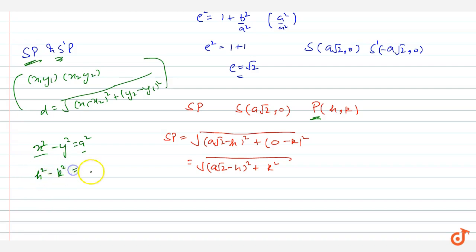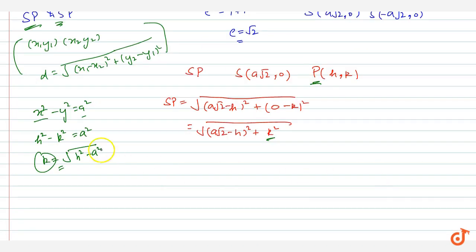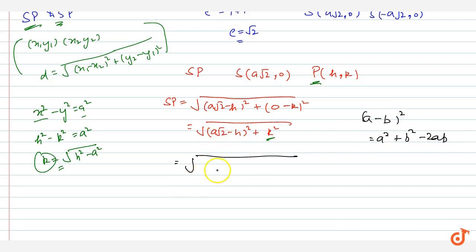Since point P lies on the hyperbola, substituting gives h² − k² = a², so k² = h² − a². Putting this k² value into our SP expression, we apply the identity (a − b)² = a² + b² − 2ab, giving us √[2a² + h² − 2√2·ah + k²] and substituting k² = h² − a² yields √[2a² + h² − 2√2·ah + h² − a²].